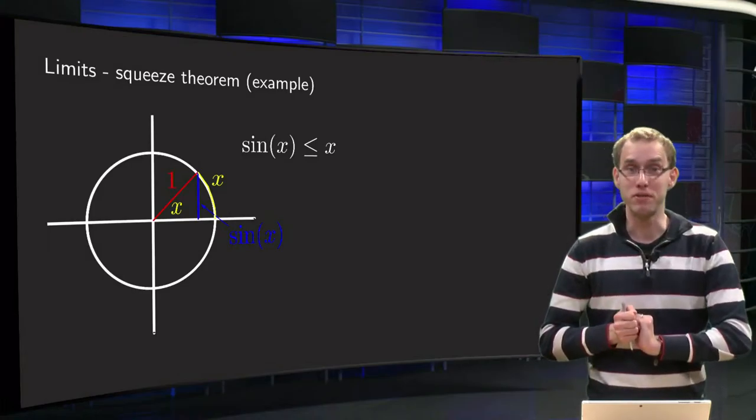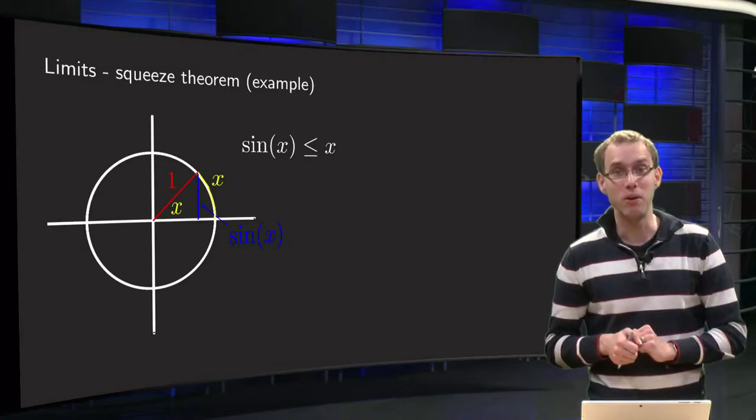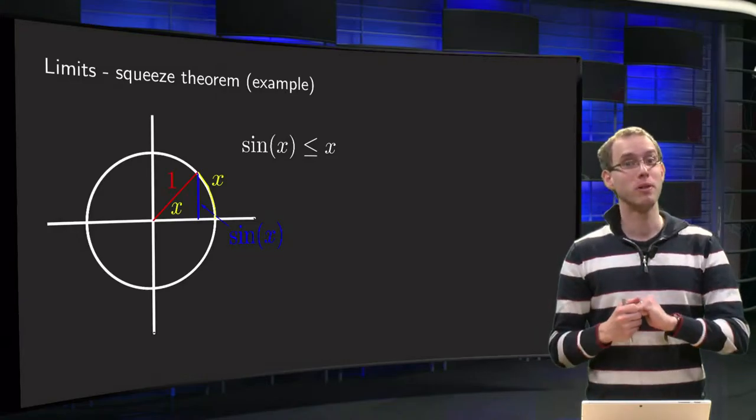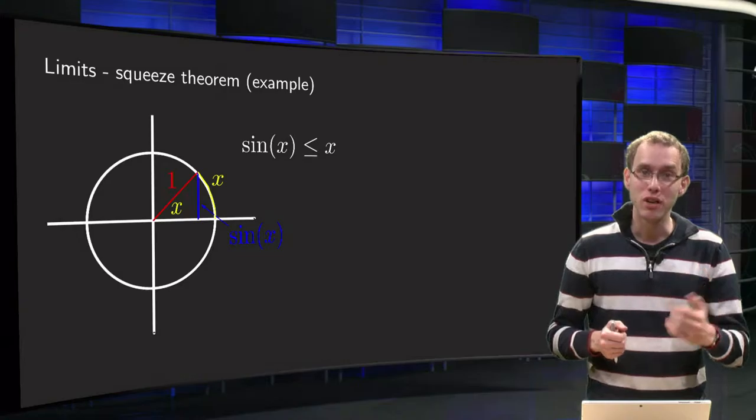How can we compute the limit of sin x over x when x goes to zero? And why do we want to do this? Let us start with the why question.